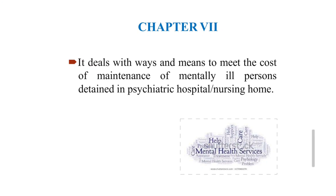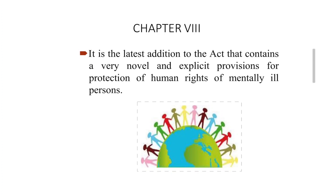Chapter 7 deals with ways and means to meet the cost and maintenance of mentally ill persons detained in a psychiatric hospital or nursing home. For private hospitals, the fee structure and expenses are borne by the patient's relatives. For government setups, the chapter covers the state government and central government contributions toward running the psychiatric hospital, including the maintenance budget.